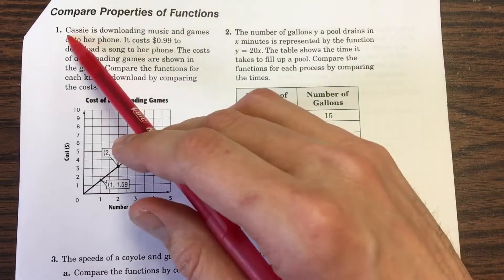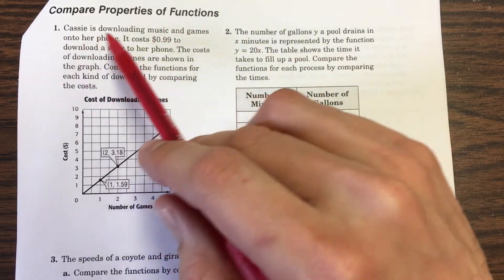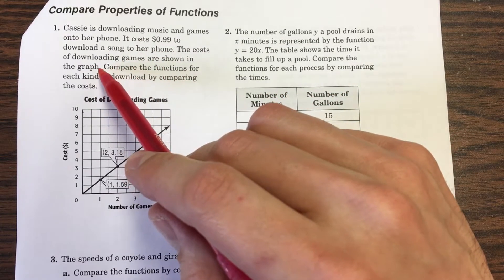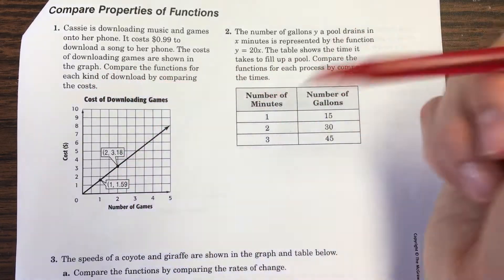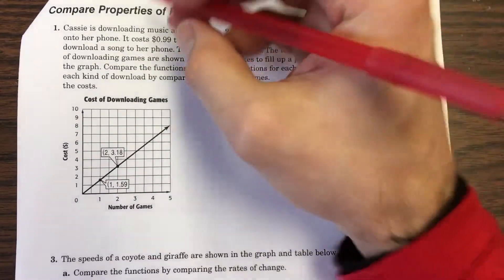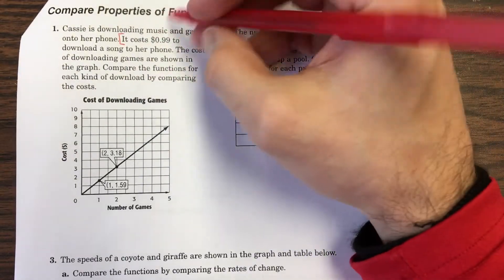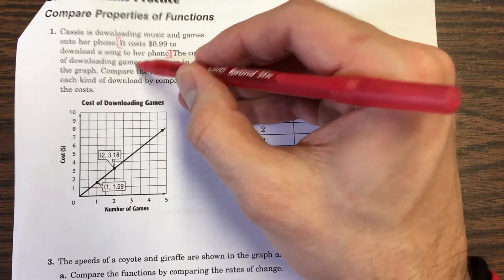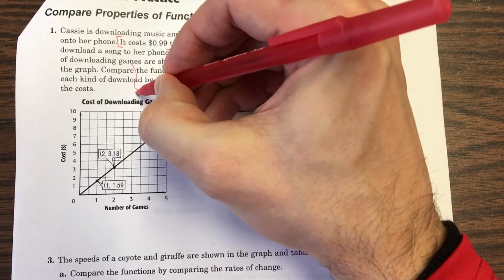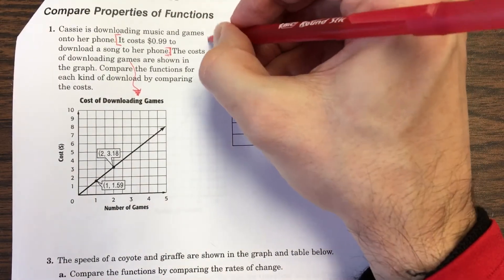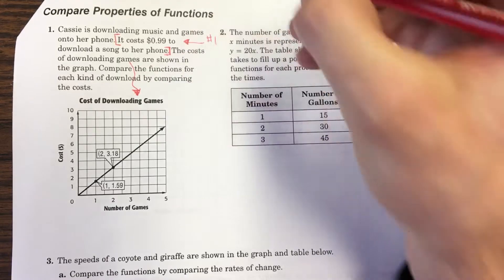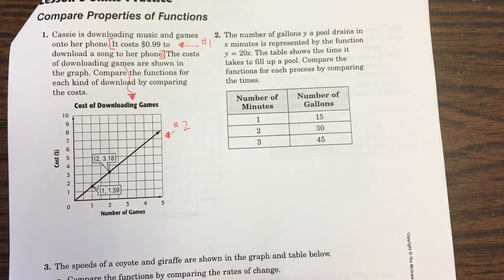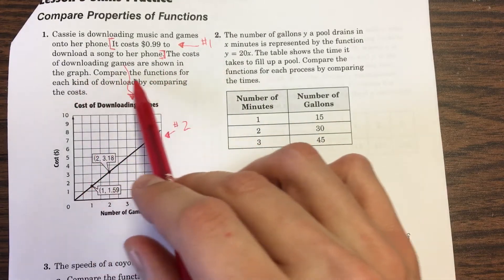So they're going to ask you to compare both situations, and if you don't pay attention to the words, you're not even going to realize that there's a situation up here. Let me show you these three examples, and hopefully that'll make sense. We're comparing properties of functions. Here's number one. Cassie is downloading music and games onto her phone. It costs 99 cents to download a song to her phone. The costs of downloading games are shown in the graph. We've already got two situations. Compare the functions for each kind of download by comparing the costs.